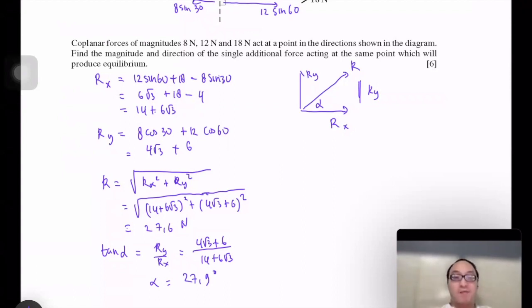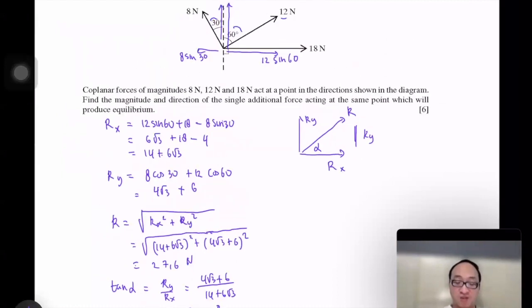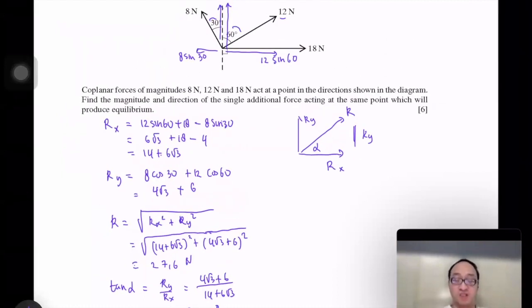Now, from our calculation, we know that the resultant force of the three forces is 27.6 and the alpha here is 27.9 degrees. This is not equilibrium.